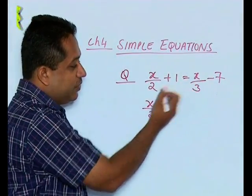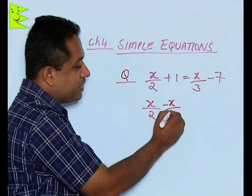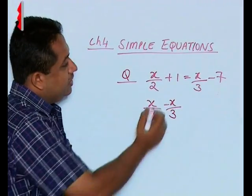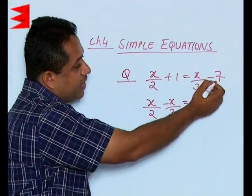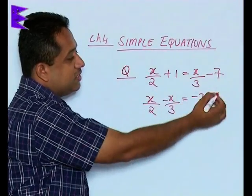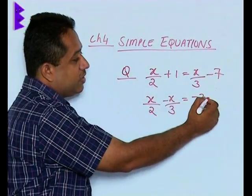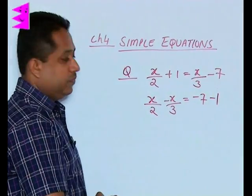That means x/2 is on the left side. We'll bring x/3 to the left. At the moment it's plus, so when we bring it here it becomes -x/3. On the RHS we have -7. We shift +1 to this side, so +1 becomes -1.